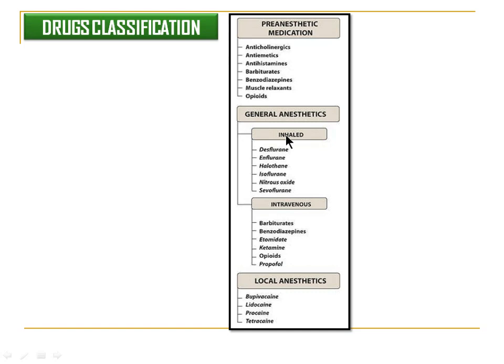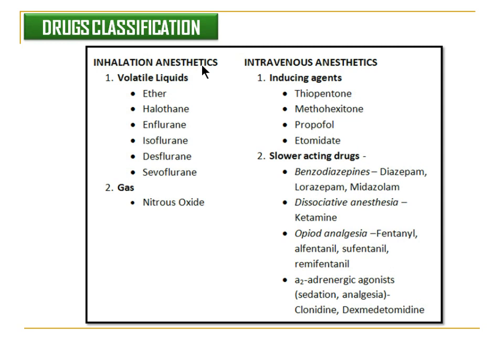The general anaesthetic can be classified into inhalation anaesthetic and intravenous anaesthetic. In inhalation anaesthetics, there are two categories: volatile liquids and gases. Volatile liquids include anaesthetics like ether, halothane, enflurane, isoflurane, desflurane, and sevoflurane. Gaseous anaesthetics include nitrous oxide.